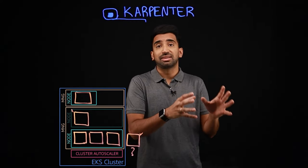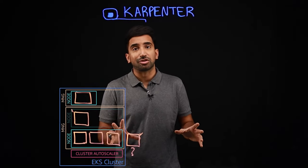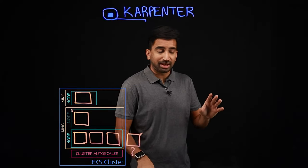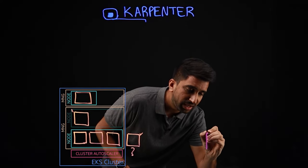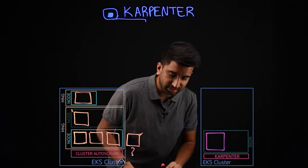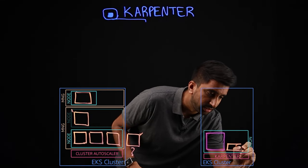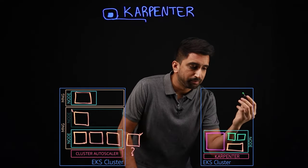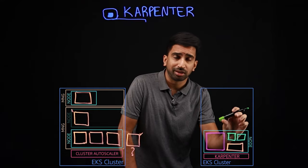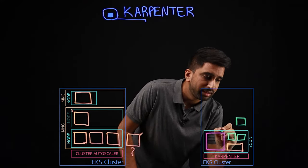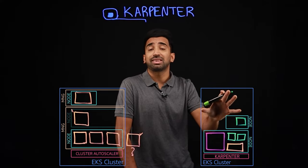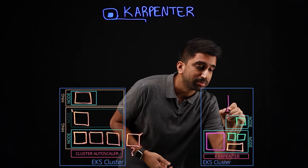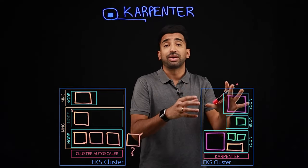Karpenter works differently — it doesn't use managed node groups or autoscaling groups; it manages each node directly. Let's take a slightly more complex example. We have a number of different pods in the cluster and they're different sizes: a big one, a slightly smaller one, and an even smaller one. If HPA says we need more of the smaller pods, Karpenter will more intelligently pick the right instance type for that workload. The same thing applies if I need to spin up a larger pod.